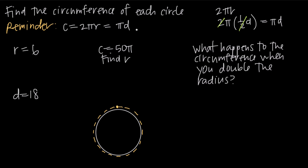Let's do a couple of examples finding circumference. What's the circumference of a circle if the radius equals 6? We just plug r equals 6 into our formula 2πr, giving us C equals 2π times 6, or C equals 12π. Sometimes you'll be asked to approximate using 3.14 or 22/7 for pi, but here we'll just leave the answer in terms of pi: circumference equals 12π.